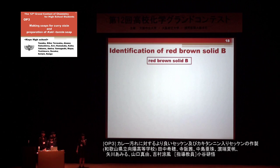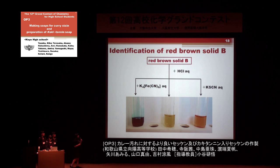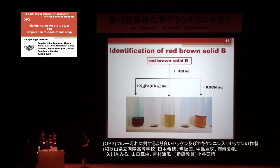Finally, we identified the red-brown solid B. The reaction of solid B with hydrochloric acid gave a yellow solution. Addition of hexacyanoferrate solution gave a dark blue reaction mixture. Addition of potassium thiocyanate solution gave a change in color to reddish orange. These results indicate that red-brown solid B is iron hydroxide.